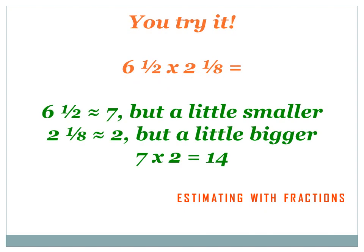This time we've got 6 and a half times 2 and an eighth, and we're going to estimate by rounding each number to something easier to multiply with. 6 and a half equals approximately 7 — that little squiggly equal sign means 'equals approximately.' We rounded up because 7 is a little bit bigger than 6 and a half. Now for 2 and an eighth — since we rounded the first number up, let's round this one down so our estimate is closer to the real answer. 2 and an eighth is just a little bit bigger than 2, so let's round it down to 2. Then 7 times 2 equals 14, so 6 and a half times 2 and an eighth equals approximately 14.